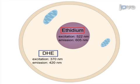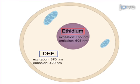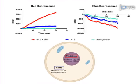The fluorescence intensity of ethidium corresponds to the amount of superoxide production, allowing quantitative measurement of intracellular superoxide generation.